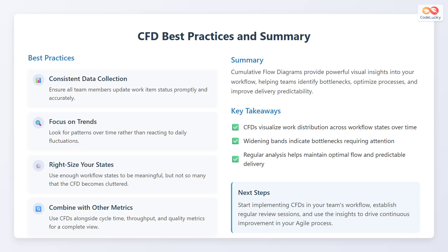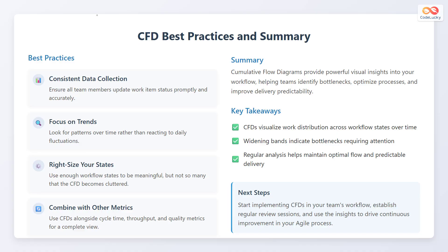Let's see the best practices. Ensure all team members update work item status promptly and accurately. Look for patterns over time rather than reacting to daily fluctuations. Use enough workflow states to be meaningful, but not so many that the CFD becomes cluttered. Use CFDs alongside cycle time, throughput, and quality metrics for a complete view.